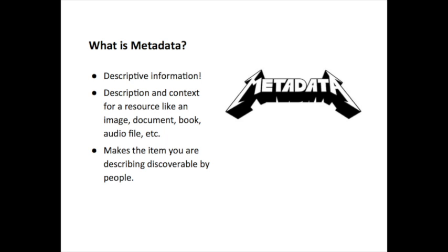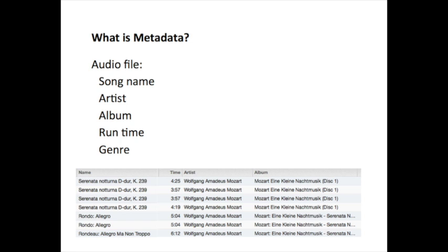So what is metadata? You can basically think of it as descriptive information, and in this context it can be describing a resource like a scanned image, document, book, or audio file. And essentially the thing that you're going to want to do is make the item that you're describing discoverable by other people. If you listen to music on your computer or phone, you're using metadata every day. So in this context we might be finding information about a song, an album, an artist, running time for a particular piece of music. All of this metadata would allow you to find music of a particular genre, sort a playlist in a different way, create your own playlist, and help you keep track of and organize all your music files.